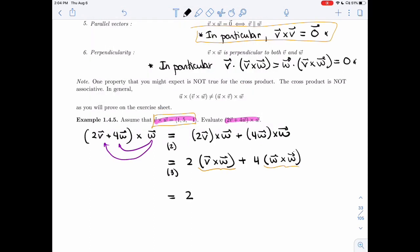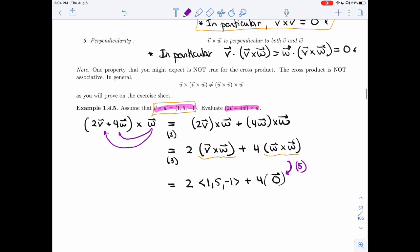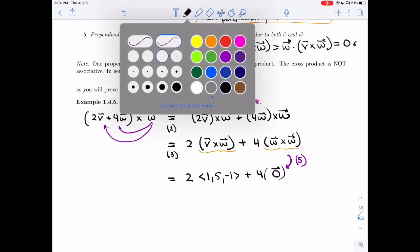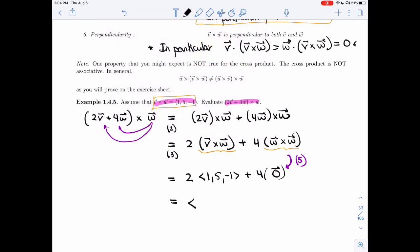And so I'll get 2 times 1, 5, minus 1 plus 4 times the 0 vector. And this here is by property 5. Since w is parallel to w, I get the 0 vector. So all in all, I end up with 2, 10, minus 2.